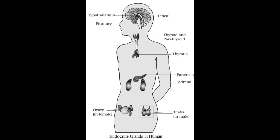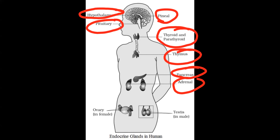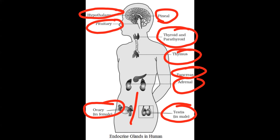Here is a list of the prominent endocrine glands of the human body: pineal gland, hypothalamus, pituitary, thyroid, parathyroid, thymus, pancreas, adrenal. In females, the ovaries are included, and in males, the testes. These are the main endocrine glands of our body.